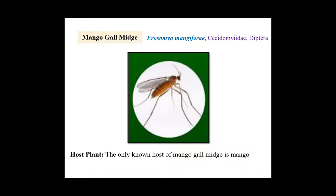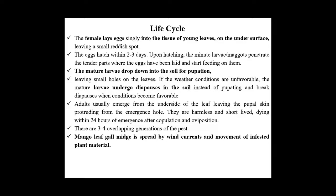The last pest of mango discussed is mango leaf gall midge. The scientific name is Procontarinia mangiferae and it belongs to family Cecidomyiidae and order Diptera. The only known host plant is mango. The female lays eggs singly into the tissue of young leaves or on the under surface, leaving a small reddish spot. Mature larvae drop into the soil for pupation. The pest is spread by wind currents and movement of infested plant material. There are three to four overlapping generations.